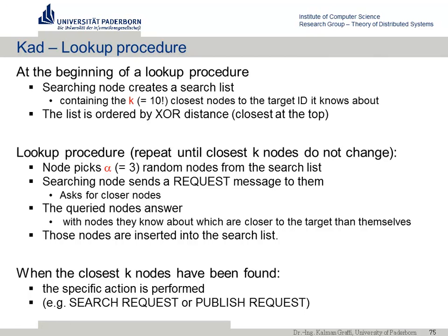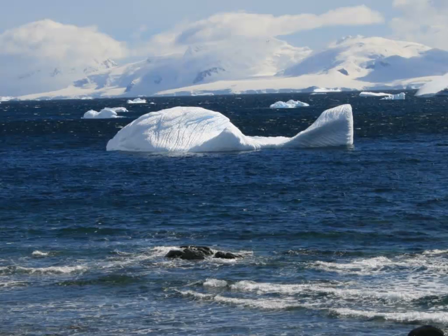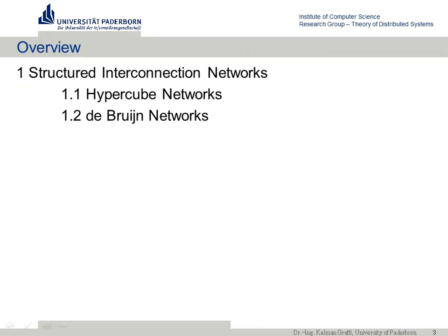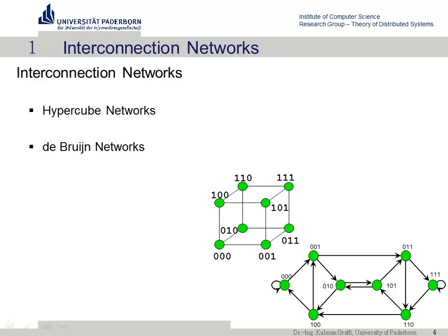Now a shorter part: interconnection overlay networks. These behave differently from the overlays seen so far. Two examples are hypercube networks and de Bruijn graph (dBG) networks. What makes them special is that they only support fixed node numbers — only powers of 2: 2, 4, 8, 16, 64, and so on. With this assumption and this drawback, they offer very performant routing and very stable conditions.